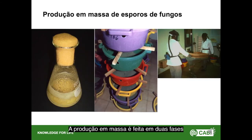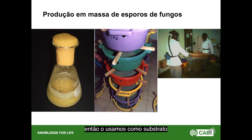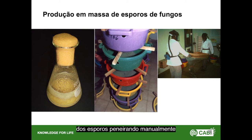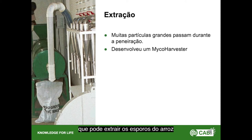We mass produce in a two-phase system: first using liquid broth, then moving to a solid substrate — in Africa, rice was readily available so we used that, though barley or other substrates can be used. Initially we hand-sieved to separate rice and spores, which was dusty and tiring, and too many large particles were getting through. As part of the project we developed a micro harvester which extracts spores from rice without particles getting through.